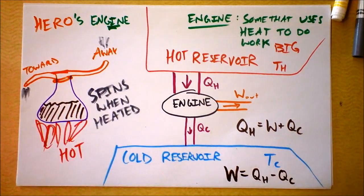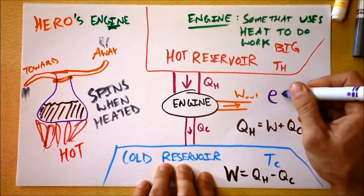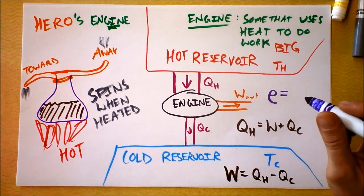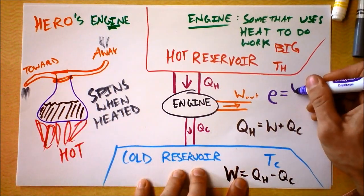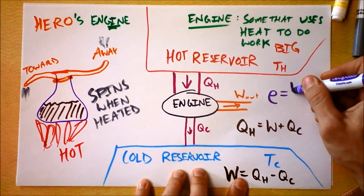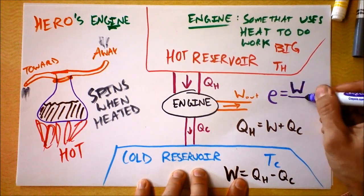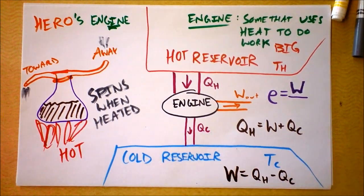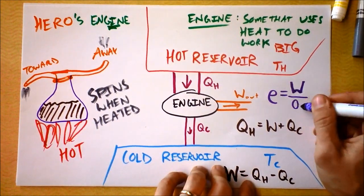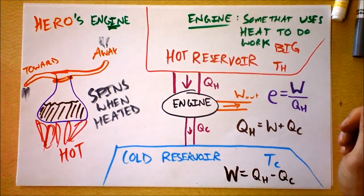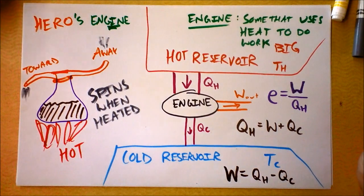Let's define efficiency because we've been talking about it a little bit. Efficiency is a lowercase e for us, and that will be the work that we get out. If you work out, you win, right? The work that you get out divided by the energy that you had to put into the system. And what is that energy that we had to put in? QH. QH is the energy that we had to put into the system.